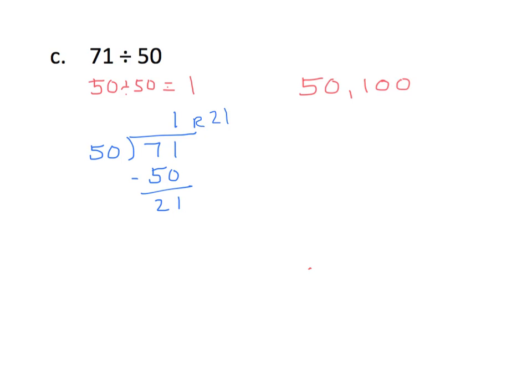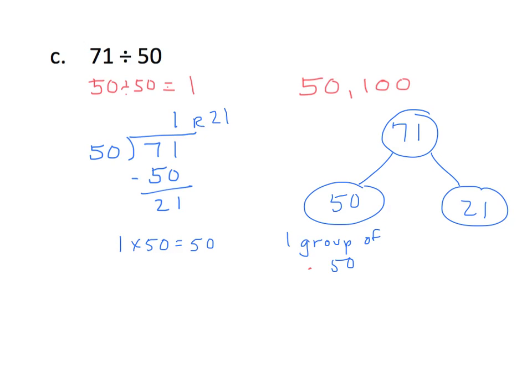So to use the model here, we will put 71, and then we're going to put in one group of 50, and that is 50. In this other number box, we'll put the 21, and we find the sum of 50 and 21 is 71. Again, more formally, 1 times 50 equals 50. Take my product, add my remainder. 50 plus 21 is 71, and again, my answer there matches my dividend.